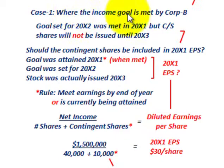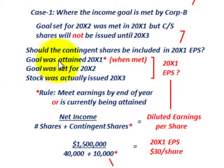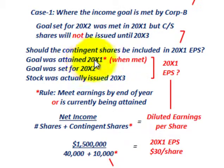In Case 1, the income goal was set for year 20x2 and was met in 20x1, but the common stock shares will not be issued until 20x3. The question is: should those contingent shares be included in year 20x1's earnings per share for Corporation A? The goal was attained in 20x1, the goal was set for 20x2, and the stock was actually issued in 20x3. So where should those contingent shares be included — in 20x1 when the goal was met, in 20x2 when the goal was set, or in 20x3 when the stocks were actually issued?